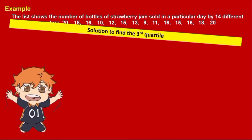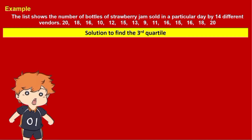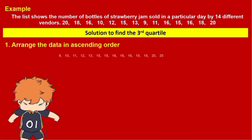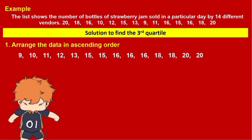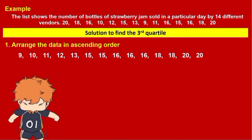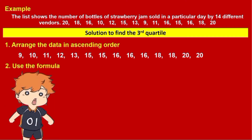Solution to find the third quartile. First, arrange the data in ascending order: 9, 10, 11, 12, 13, 15, 15, 16, 16, 16, 18, 18, 20, 20. Second, use the formula. Here is the formula. Then, substitute the number of vendors: 14 plus 1 is 15.